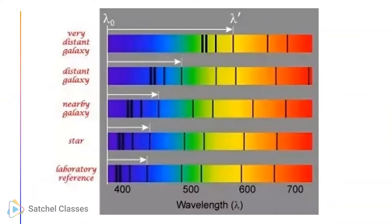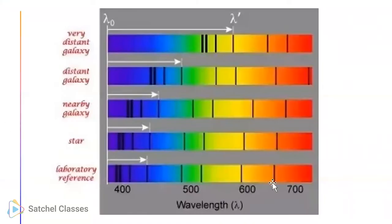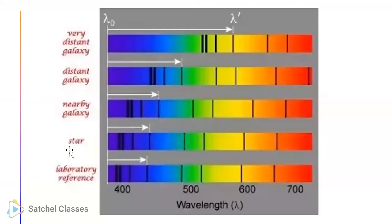We're going to focus on redshift today. We look at an element in a lab - for example, hydrogen in the lab. We're burning some hydrogen in a lab on earth, splitting the light with a prism. You see these dark lines, called Balmer lines, on the spectrum. The science of doing this is called spectroscopy - you may see that word in your exam.